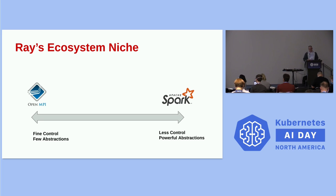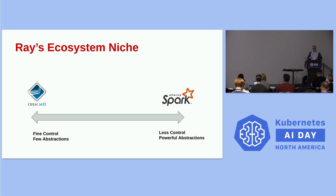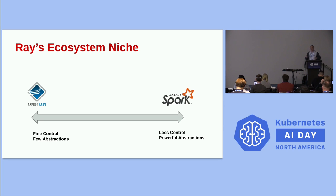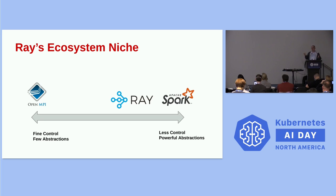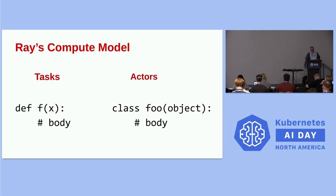Regarding Ray's ecosystem niche — show of hands, how many people have actually worked with Ray? A few. The rest of you have justified all the context I'm about to deliver. If you consider older tools like OpenMPI at one end of the spectrum, you have extremely fine-grained control of parallelism but very few abstractions. At the other end, more modern tools like Spark give you less control but extremely powerful abstractions. Ray was designed to sit in between, though closer to Spark — it has powerful abstractions but you can access compute at a slightly lower, more flexible level.